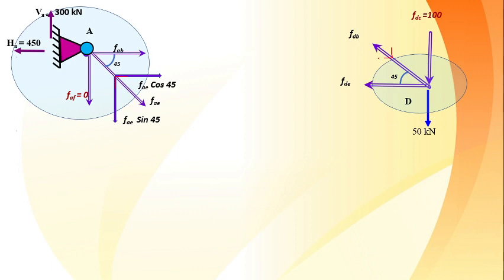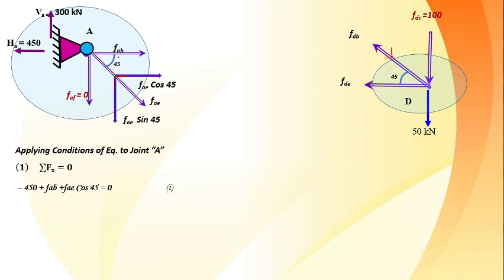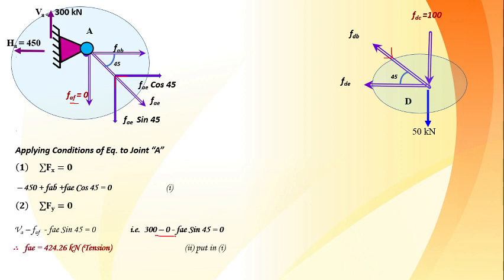Substituting FDB = 212.13 into the sigma Fy equation at joint D gives FDE = -150. The negative sign means the assumed direction is wrong; FDE is compressive at 150 kN acting in the corrected direction. All four unknowns at joints A and D are now found: FAE, FAB, FDB, and FDE.